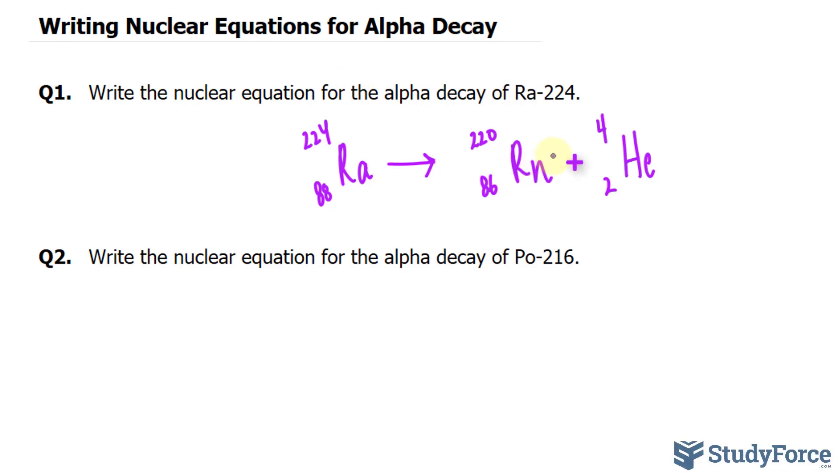Let's go ahead and replicate this for the next example, where we have polonium, and its atomic mass is 216. So polonium, 216, and it happens to be the 84th element on the periodic table. So 84 protons per atom.